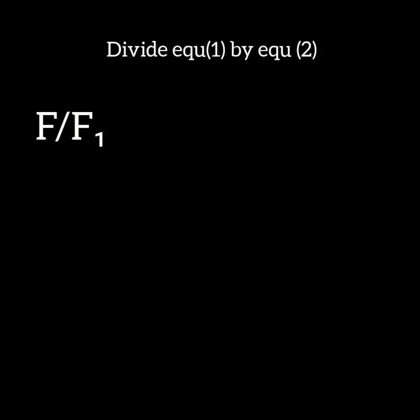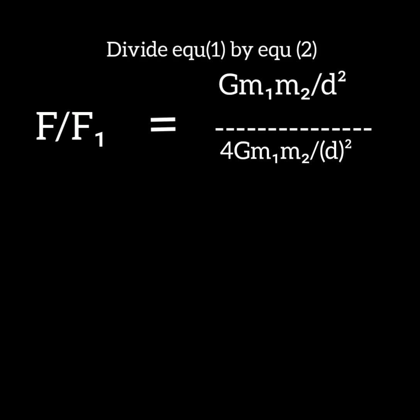Now divide equation 1 by equation 2. We get F by F1 equals G M1 M2 divided by D square, whole divided by 4 G M1 M2 by D square. That gives F by F1 equals 1 by 4.